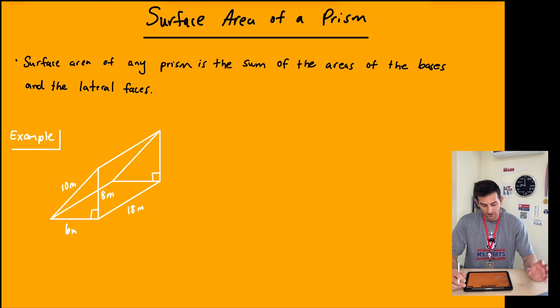To find the surface area of any prism, it's just the sum of the areas of the bases and the lateral faces. The bases could be the shape that makes up the top and bottom, or the front and back—it depends on the orientation of your shape. The lateral faces are the faces that go around the prism.